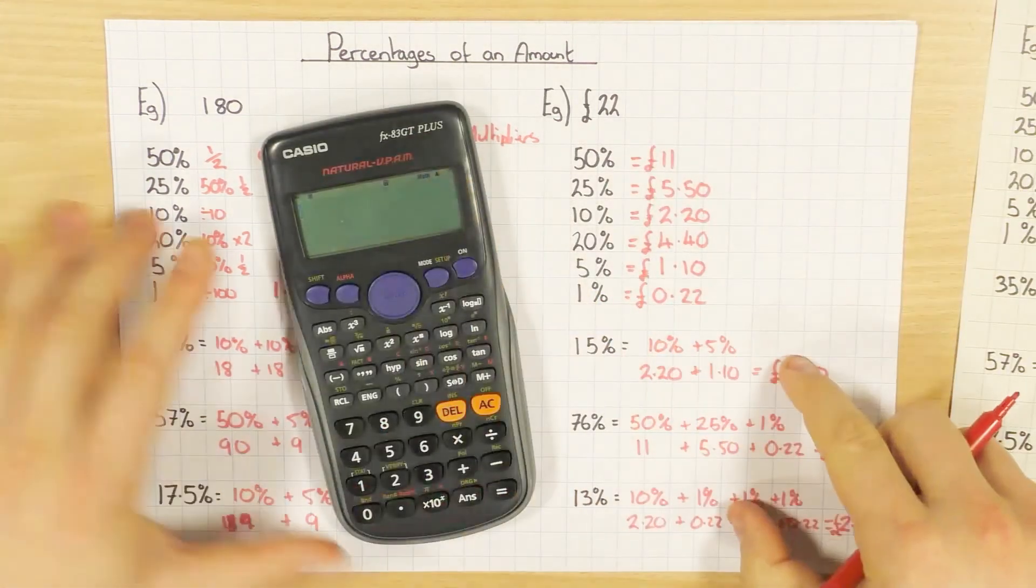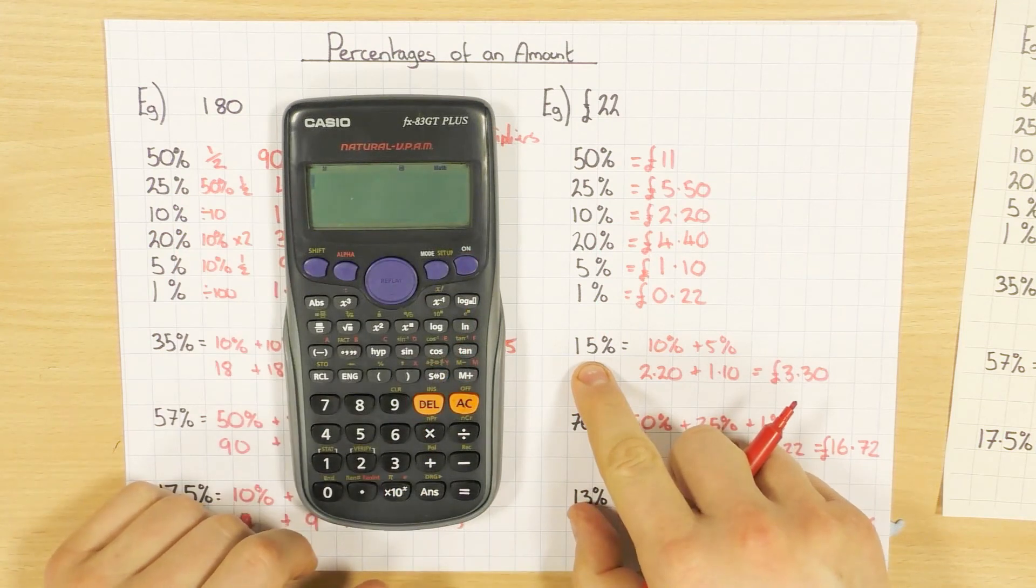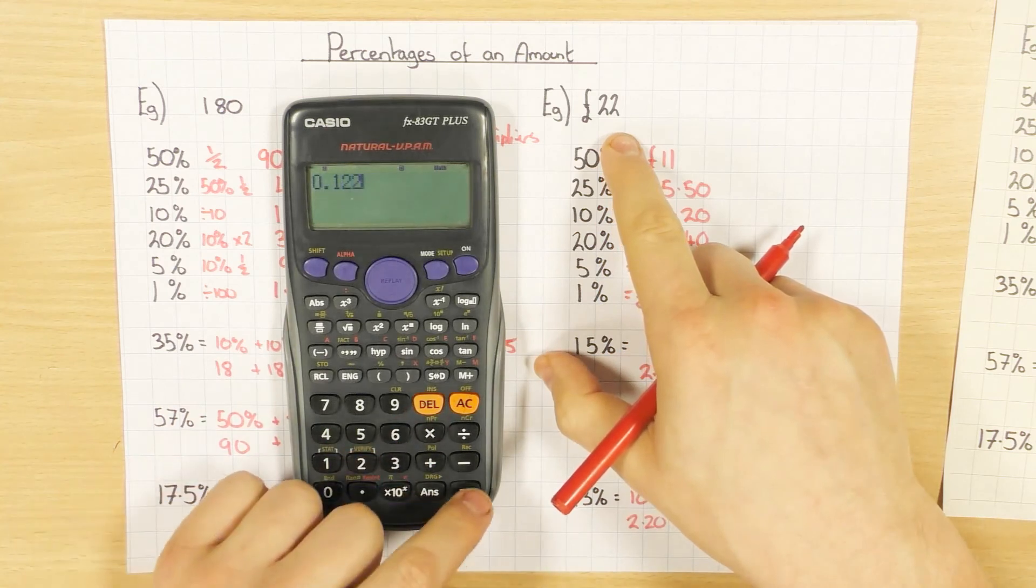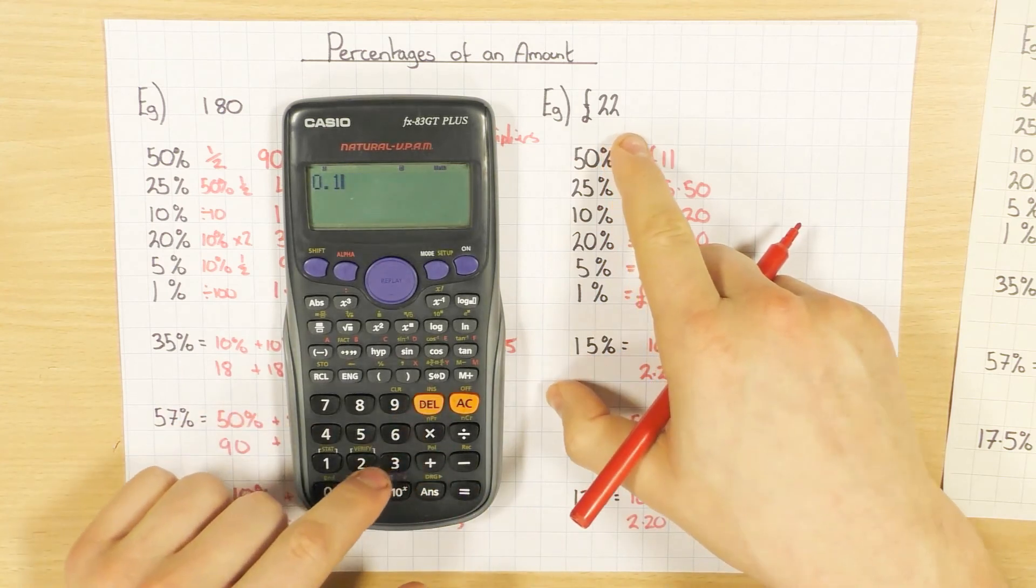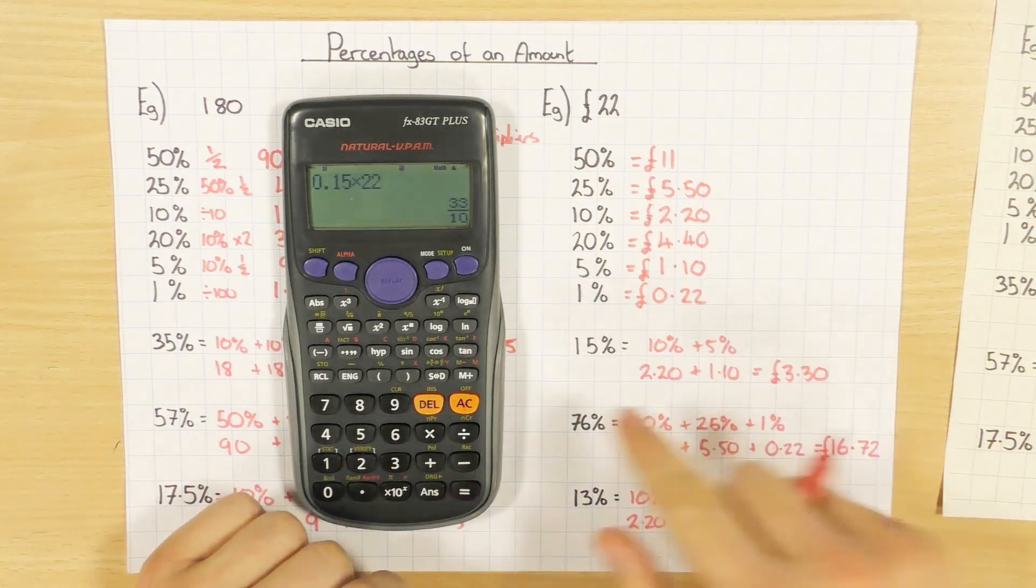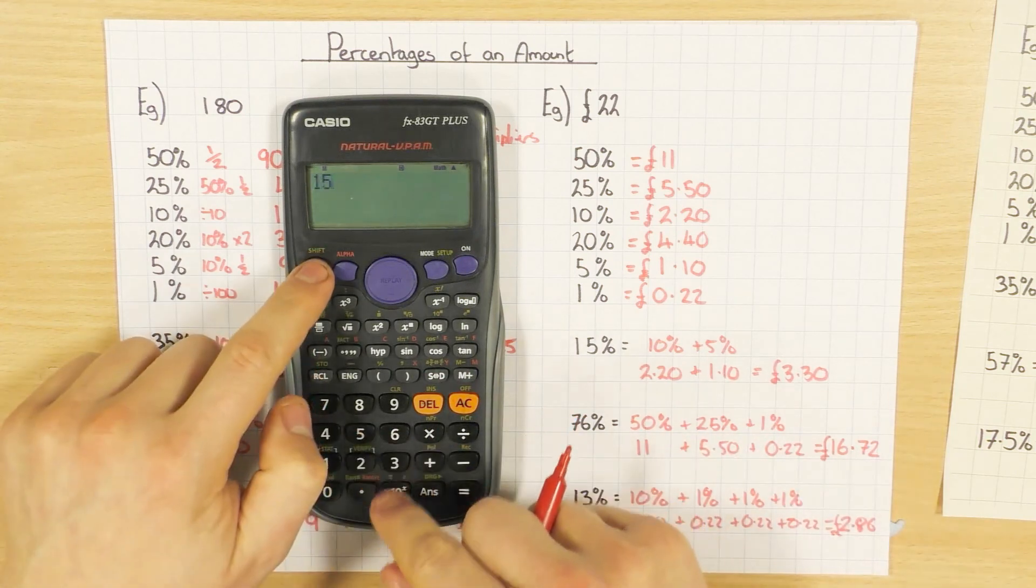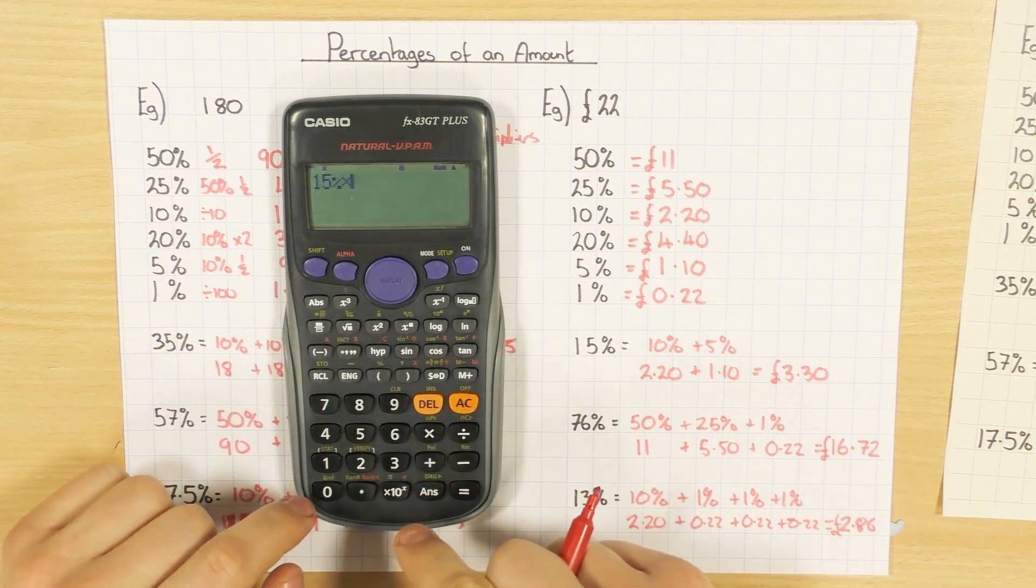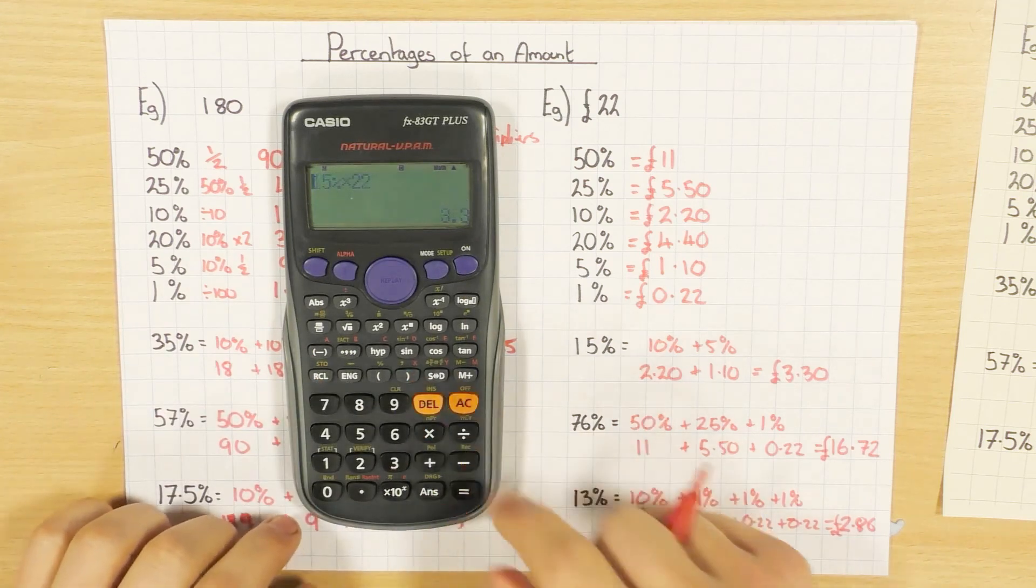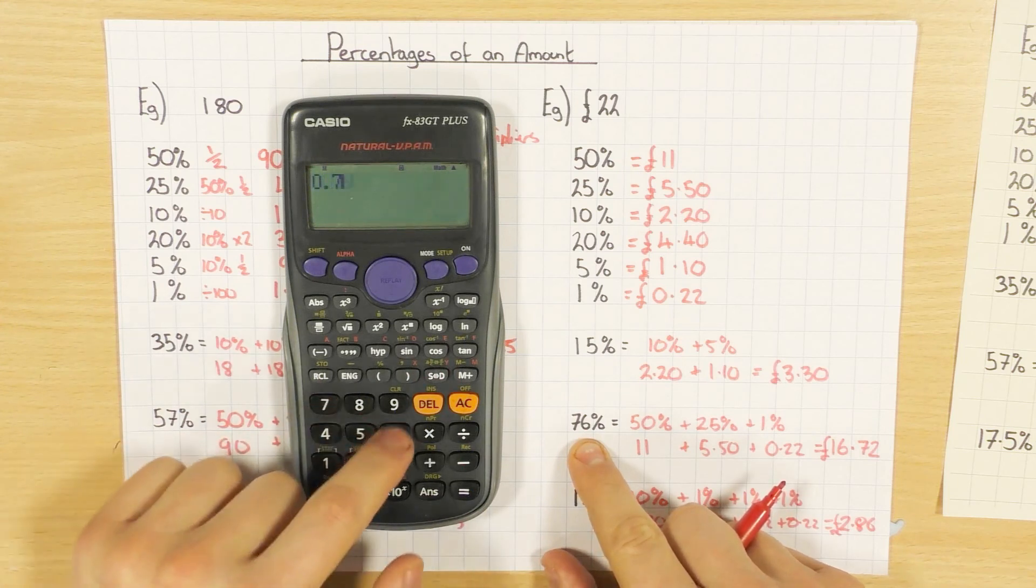So again, if you want to do it on a calculator, you can use a decimal multiplier. So we're going to have, convert 15% to a decimal. So you can have 0.15 times by 22, and of course that will be £3.30. Or you could use 15% times by 22, which of course again will give you the same answer. So two different ways you can do it. The decimal multiplier for 76% would be 0.76, times that by my 22. And again, we'll see we get £16.72, or 76% times by 22. And again, 16.72.